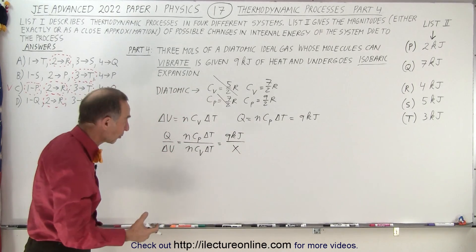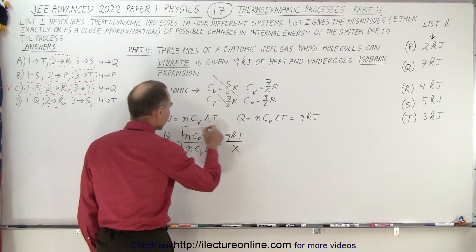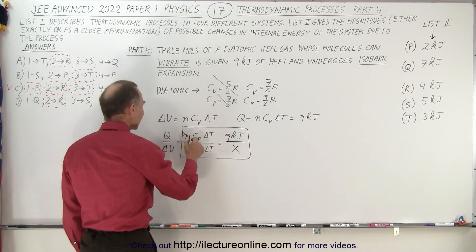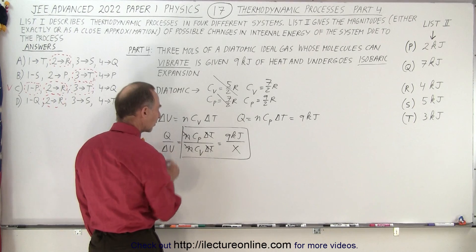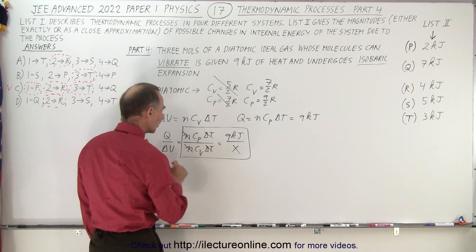So essentially what we're doing here is we're looking for X. And we can see that if we take this part of the equation that N cancels out and delta T delta T cancels out and we know what C sub P is and we know what C sub V is.